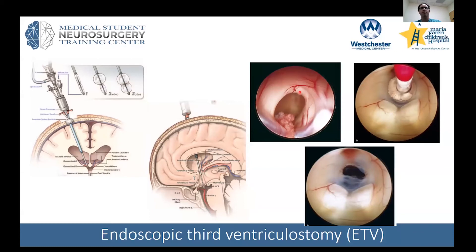The fornix runs in this area. There are large veins along the septum and thalamus, the mammillary bodies are visible, and just below this tuft of arachnoid lies the basilar artery and the posterior cerebral arteries. It is very high-stakes, high-real-estate territory where you're working.